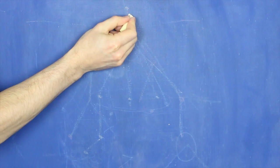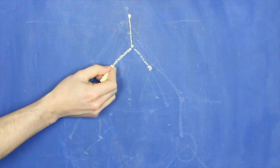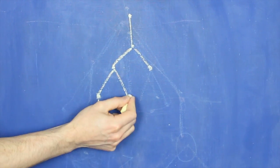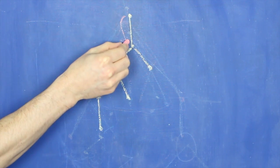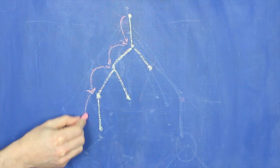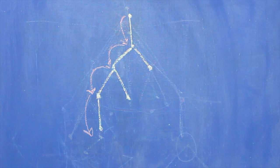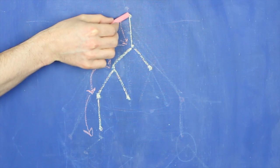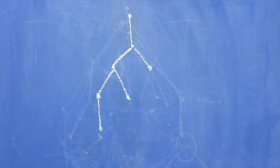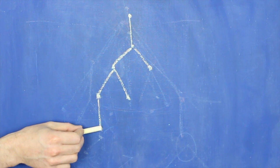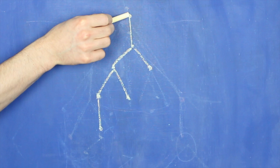We can take this idea of family relations further. When we have a node that has a child, and it has a child, and it has a child, etc., we call that last node a descendant of the first node, and the first one is an ancestor of the last node. So this node here is an ancestor of this node at the bottom, and this node at the bottom is a descendant of this one at the top.